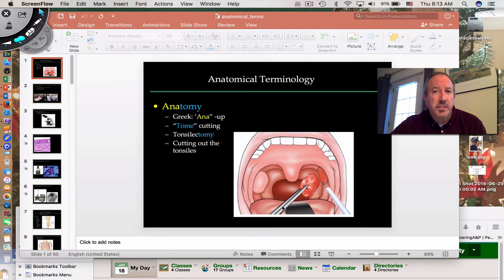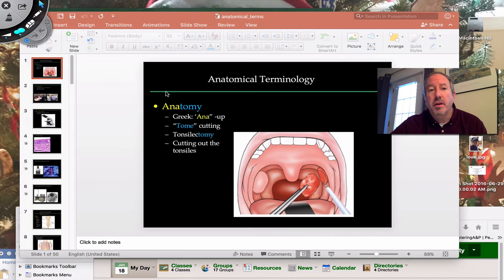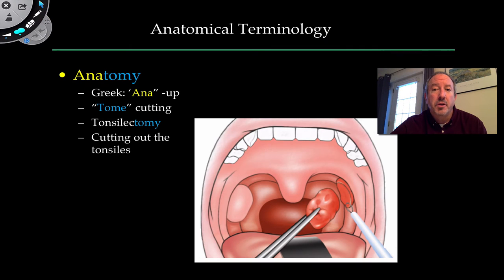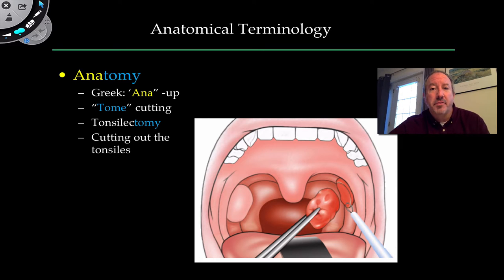We need to know directions in terms of left and right, what is up and what is down, and we should also get into a conversation about various planes that allow us to slice the body so we can refer to certain regions most accurately. This is important because when you're looking at imaging techniques like MRI, CAT scans, or X-rays, you need to be able to reference where you are — kind of like a map.